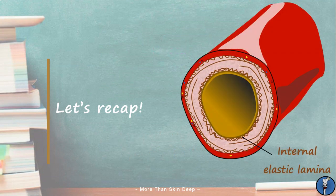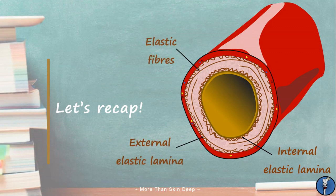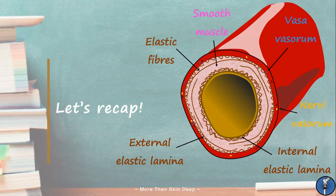Arteries have an internal elastic lamina, elastic fibers in the tunica media and sometimes an external elastic lamina. They also have a very thick layer of smooth muscle in the tunica media and vasovasorum and nervi vasorum in the tunica externa only.